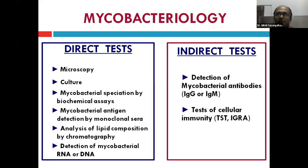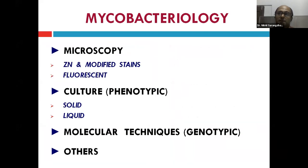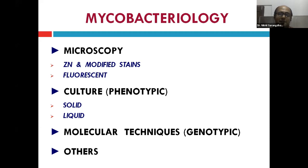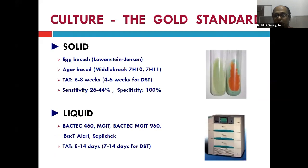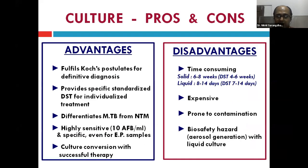Diagnostic tests for TB are broadly classified into direct tests — which detect the presence of Mycobacterium tuberculosis — and indirect tests, which measure the body's immune response. Microbiological tests fall into four types: microscopy (Ziehl-Neelsen and modified acid-fast stains, fluorescent microscopy), culture (solid and liquid — phenotypic), molecular techniques such as GeneXpert and LPA (genotypic), and other tests. Culture turnaround time is six to eight weeks for solid, shorter for liquid, with additional days for DST.